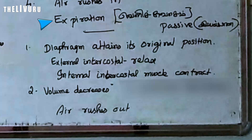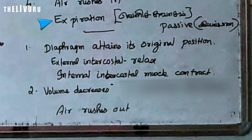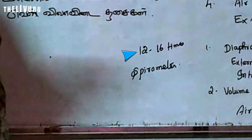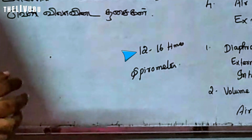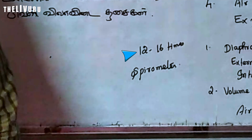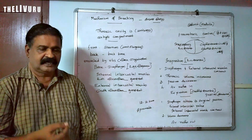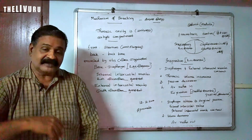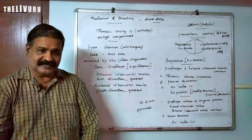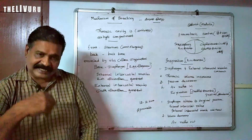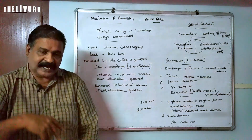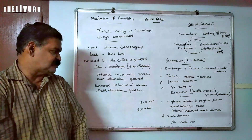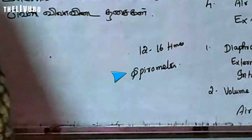This is expiration. Now, if you are healthy, in one hour you breathe 12 to 16 times. The volume of the air inhaled and the volume of the air expelled out can be measured with the help of an instrument known as a spirometer.